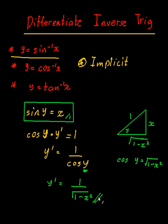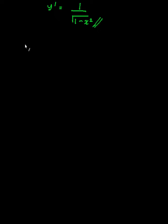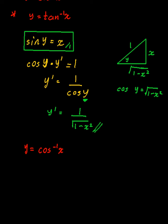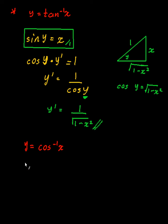Substituting back in, y-dash equals one over the square root of one minus x squared — and that's how you differentiate sine inverse of x. Now, how do you differentiate cos inverse of x? You might be inclined to use the same triangle technique, but I'm actually going to use a trick. Let me call this u equals cos inverse of x instead.